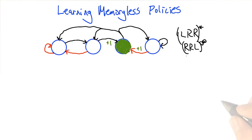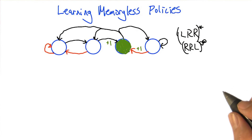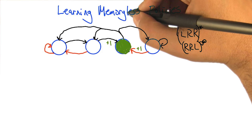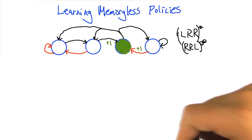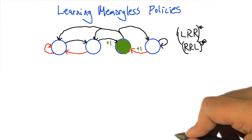Or you could just invent memory. POMDPs do invent memory. If you're going to learn the POMDP model of this, it captures the memory that you need to actually make optimal decisions.